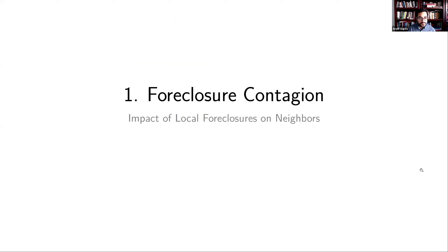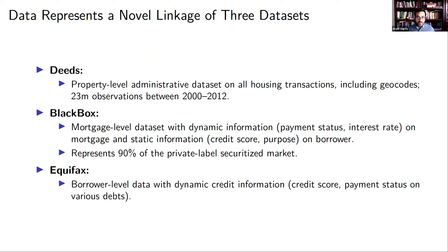We first start with a paper on foreclosure contagion. To study this question, we connect a few different data sources. We have deeds data that is geocoded, so we know the exact location of homes. This data on housing transactions includes foreclosures and refinancings for a large administrative sample of many homes. For many of these properties, I connect this to Black Box data at the mortgage level, with really detailed contract information — comprehensive of the private label securitized universe, basically all loans securitized not by Fannie and Freddie. Finally, we have an Equifax dataset linked in, providing credit information linked to these borrowers.